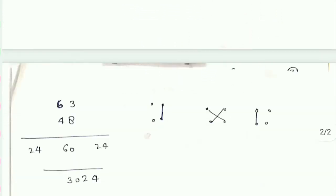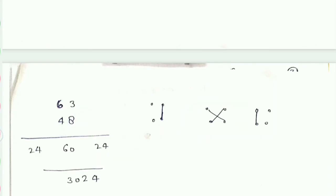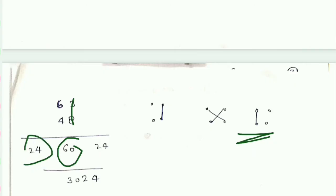अब क्या होता है कि जब भी multiplier में 2 numbers हों — 2×2 का multiplication होता है। अगर multiplier में 2 digit हो तो हम इसको इस प्रकार से लिखते हैं। पहले हम जो first unit होती है उन elements को multiply करते हैं। जैसे 8×3 करेंगे तो यह 24 आएगा। फिर हम इस unit को multiply करेंगे — 6 into 4, 24 आ जाएगा।